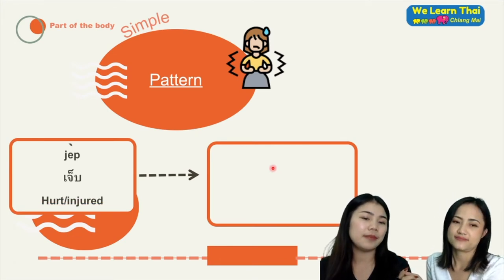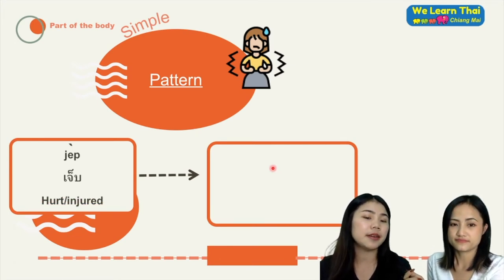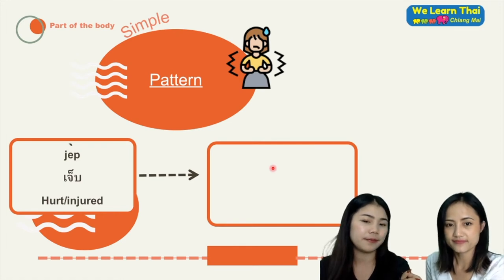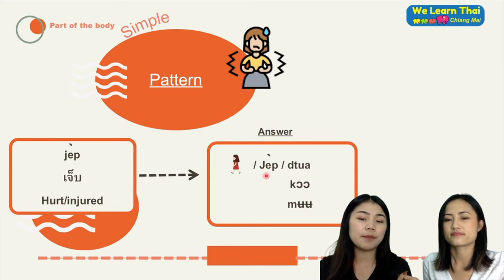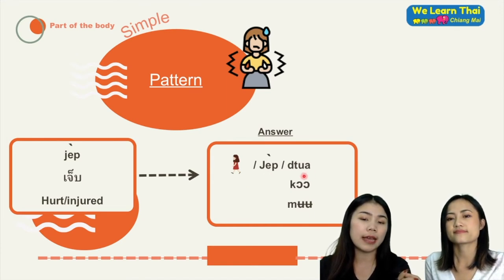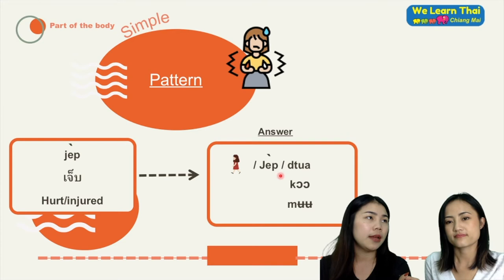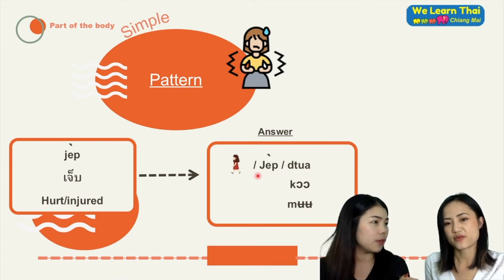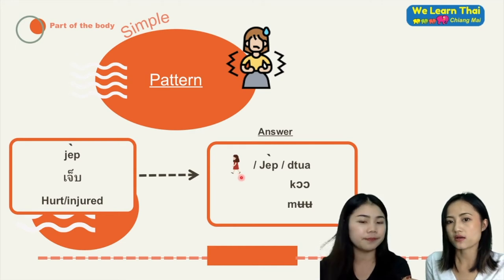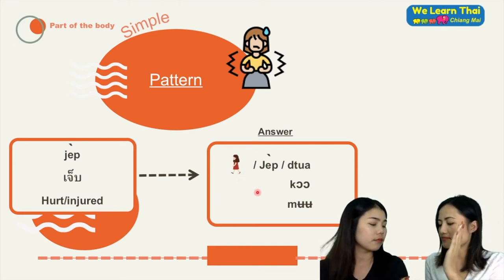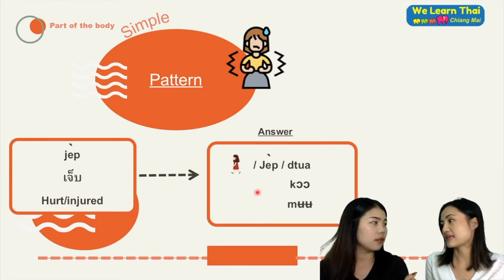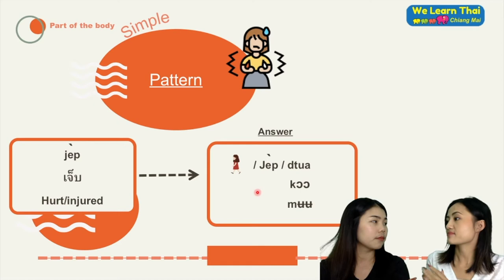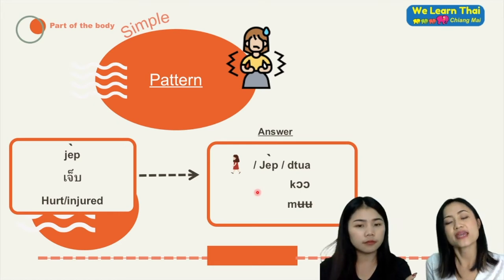Next we have the word เจ็บ, meaning hurt or injured. For example, you can say เจ็บตัว, meaning 'I hurt my body' or 'my body got hurt.' Maybe from a fight, from somebody punching you. So if you have a bruise, wound, or anything on the surface, we say เจ็บ — surface injury.